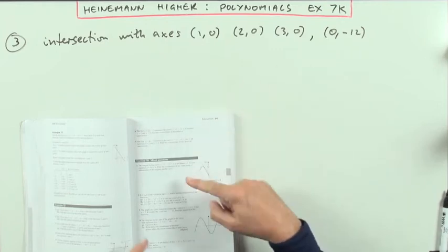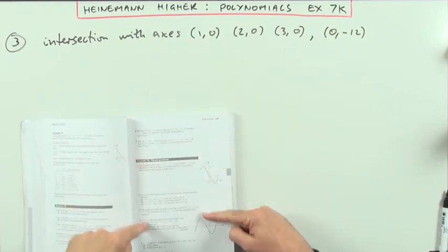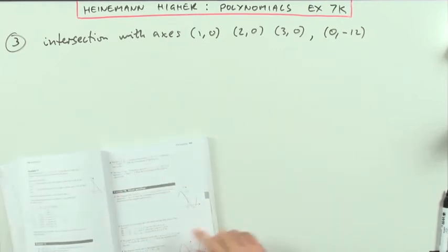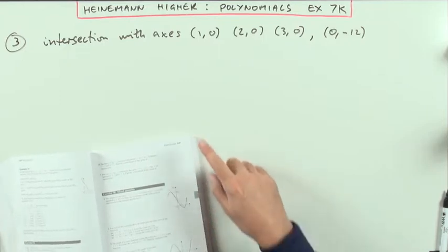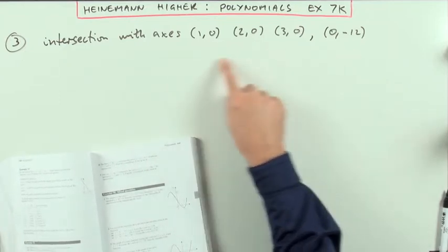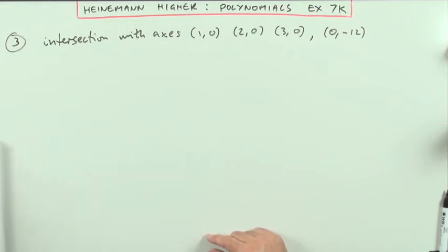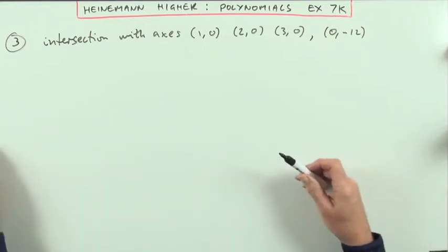Heyman Higher, Chapter 7 on Polynomials, the mixed exercise 7k at the end. Number 3: the graph of a cubic function crosses the axis at these points - 3 on the x-axis, 1 on the y-axis. What is the equation of the graph of that function?